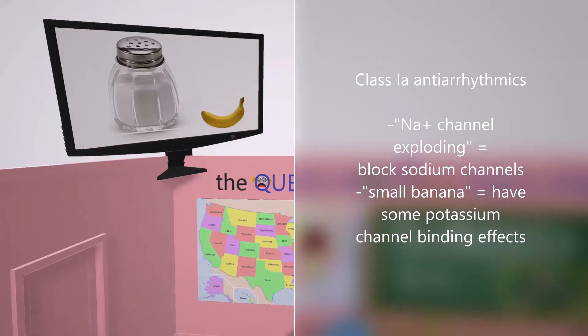We also notice the banana, which reminds us of potassium — that class 1A drugs also act on potassium channels. That is, they're also involved in some potassium channel blocking effects.